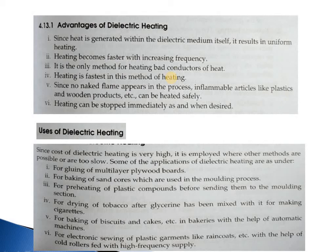Now we will see the advantages of dielectric heating. Six points are shown as advantages of dielectric heating. First, since heat is generated within the dielectric medium itself, it presents uniform heating. Secondly, heating becomes faster with increasing frequency. Third, it is the only method for heating non-conductors of heat. Fourth, heating is fastest in this method. Fifth, since no naked flame appears in this process, inflammable articles like plastic and wooden products can be treated safely. Sixth, heating can be stopped immediately when desired.